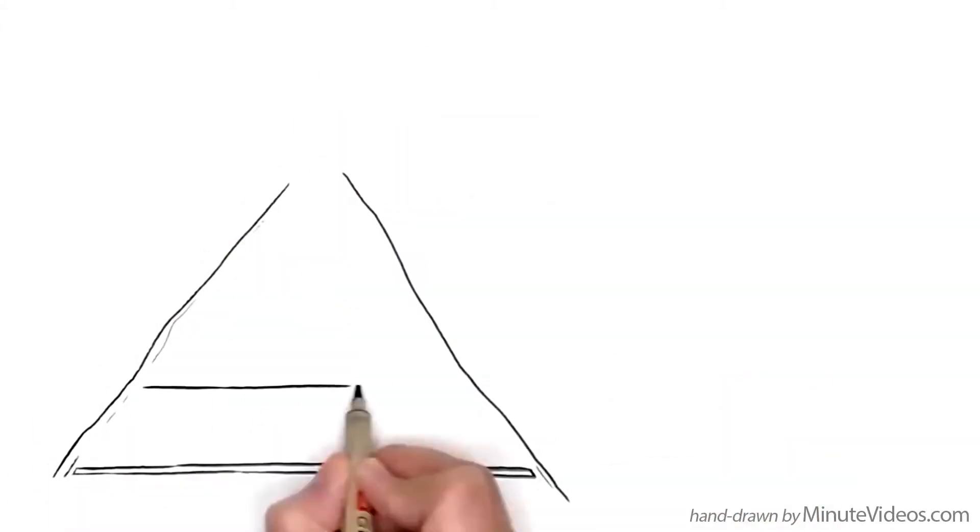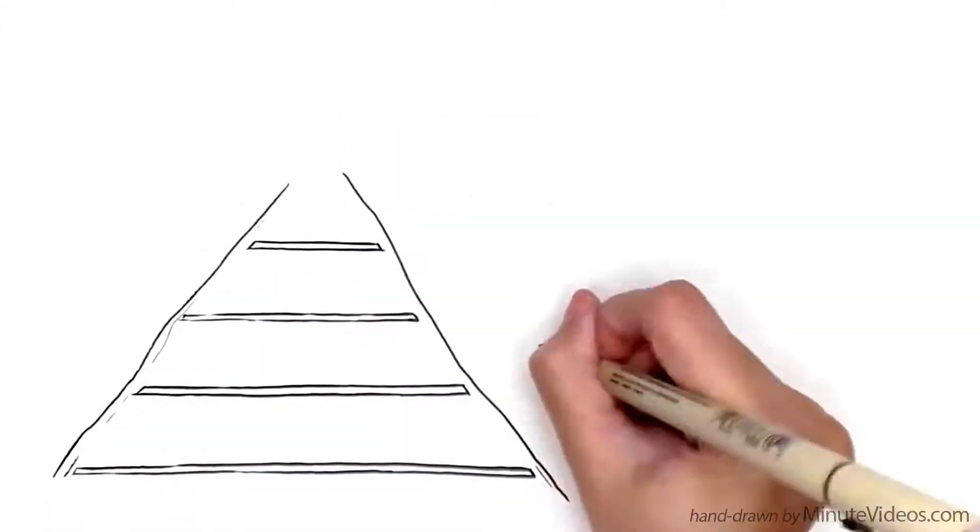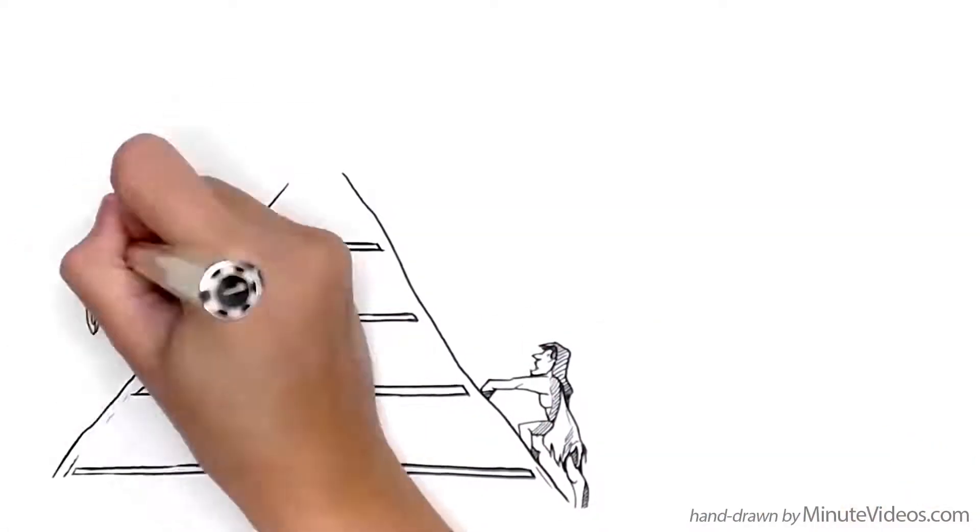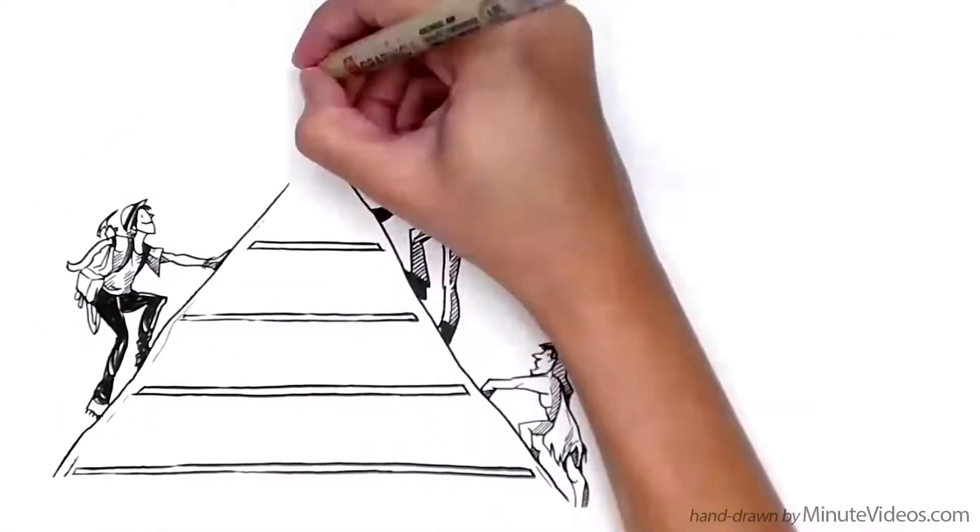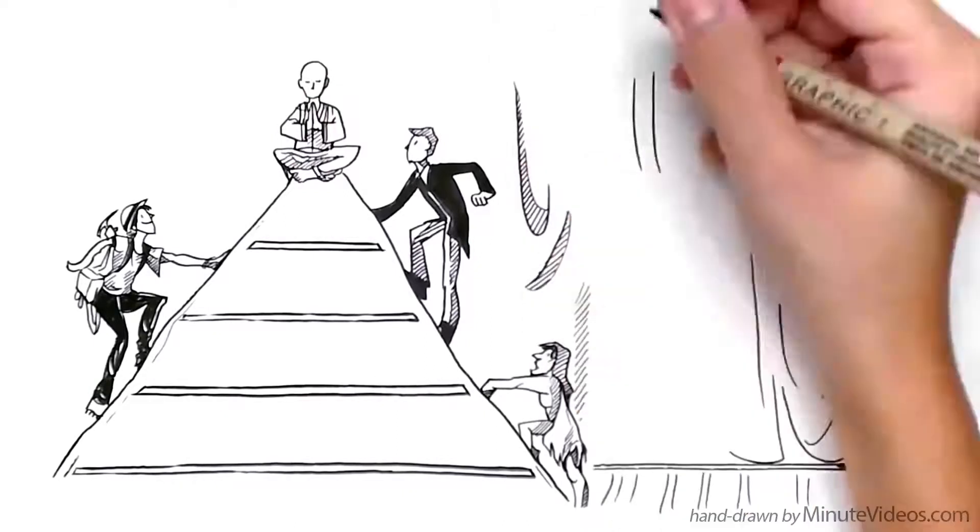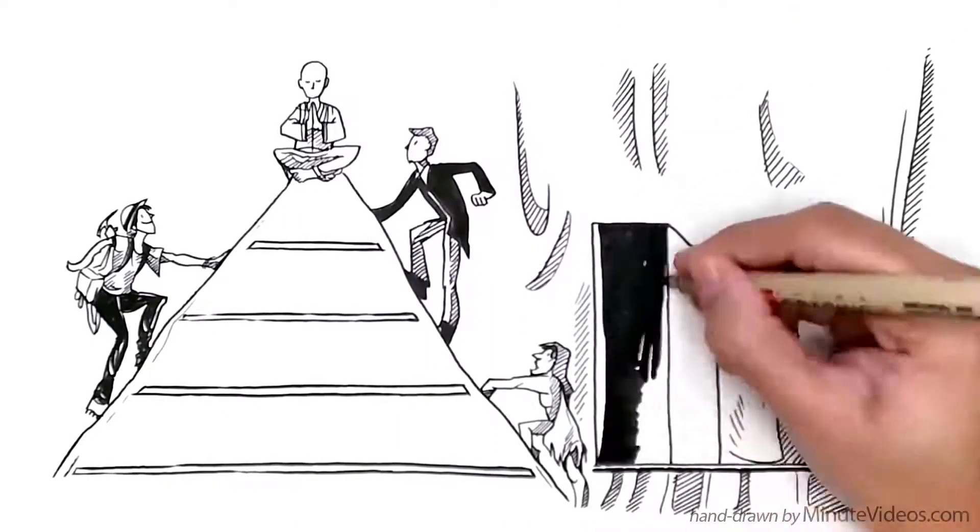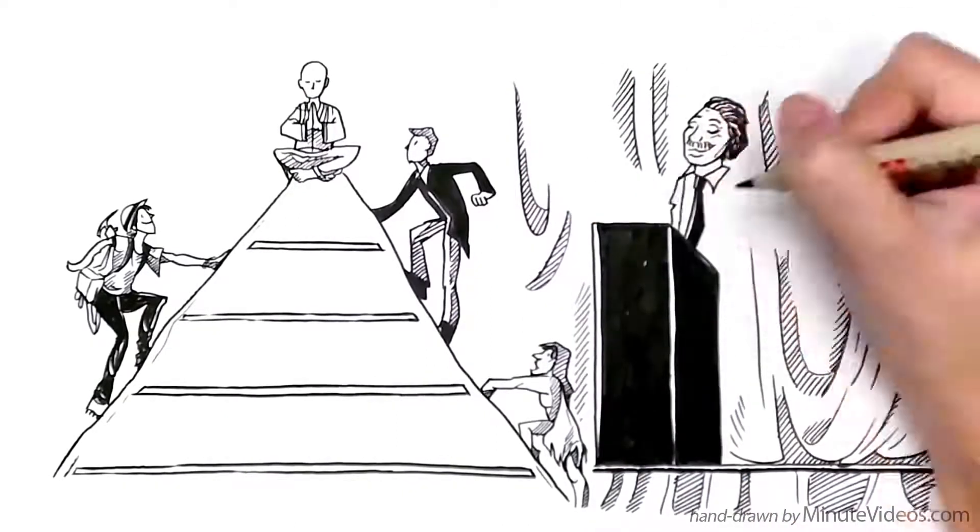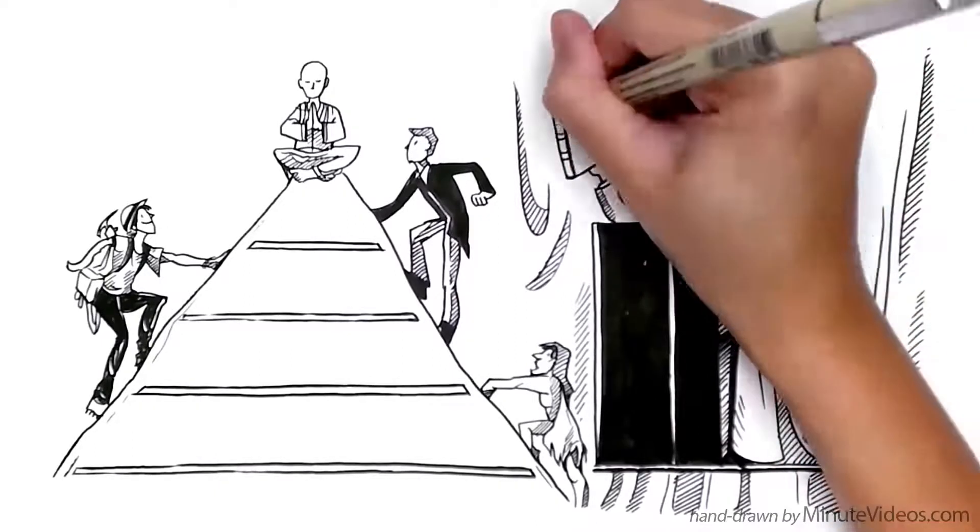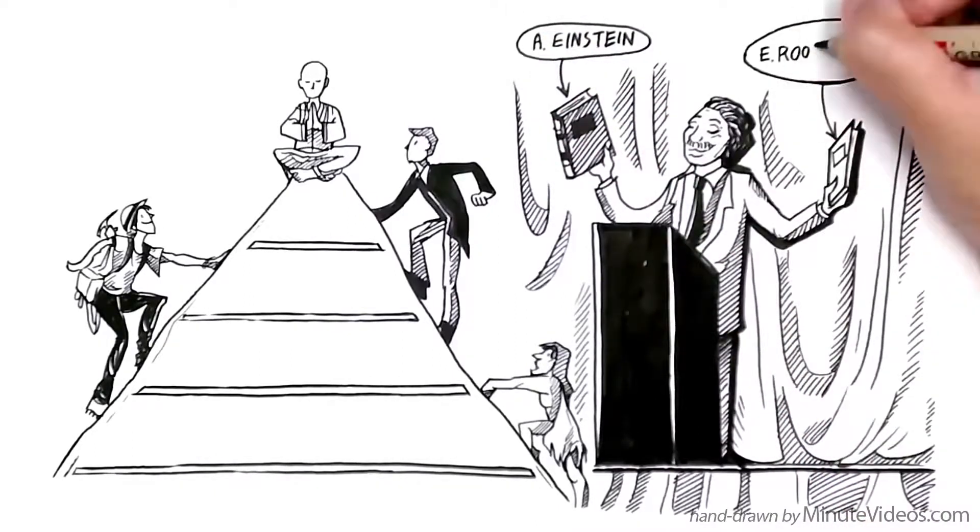Maslow's hierarchy of needs is a theory in psychology. It argues that there are five stages of human needs that motivate our behavior. Abraham Maslow proposed his theory in 1943 after studying what he called exemplary people, such as Albert Einstein or Eleanor Roosevelt.